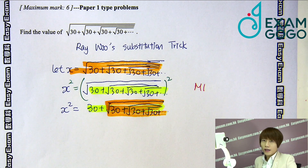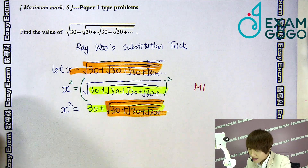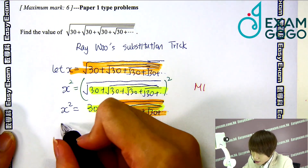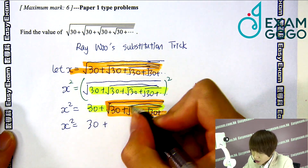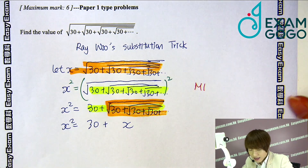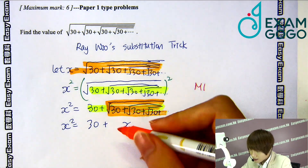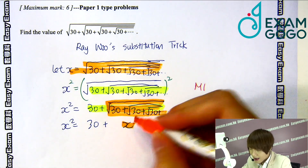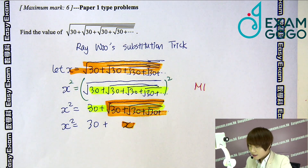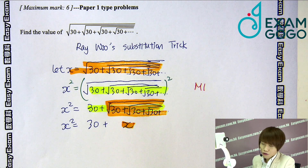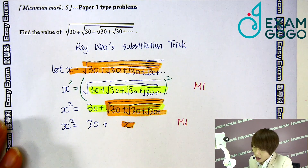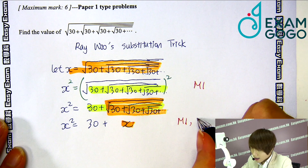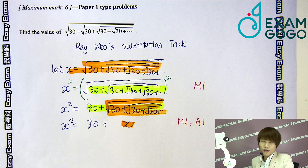That's why I call this the substitution trick — because the second term is the same as x, you can just substitute it with x. So you get x² = 30 + x. If you get this right, you will be awarded M1 for the evidence of a valid approach, and A1 for getting the correct equation.